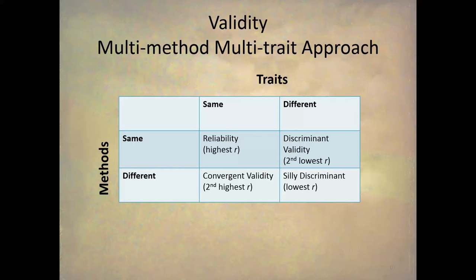We give those two tests to people and we expect that using the same method — the BEM Sex Role Inventory — with different traits, that is masculinity and femininity, when we compare those to each other, they should not correlate well because masculinity and femininity are not the same thing. We call that discriminant validity and that should have the lowest correlation. Then we use different methods — the PAQ and the BSRI — and correlate people's scores on the same trait, that is masculinity. This should have the highest correlation, and we call that convergent validity.